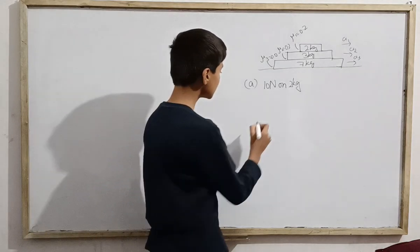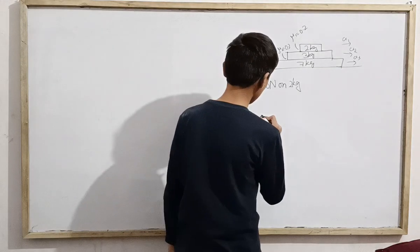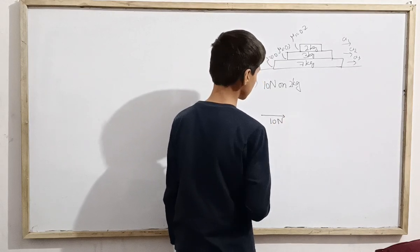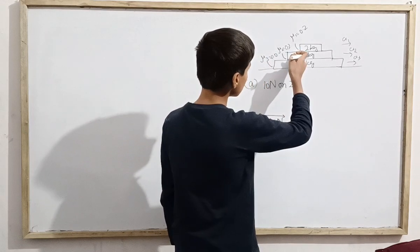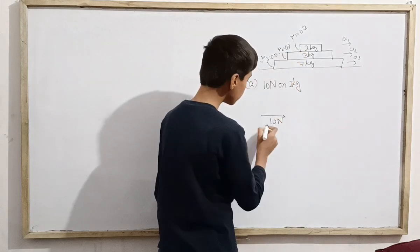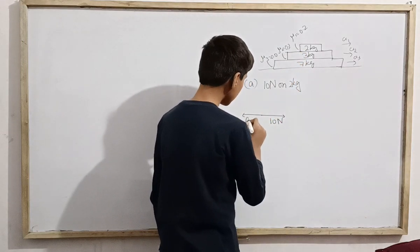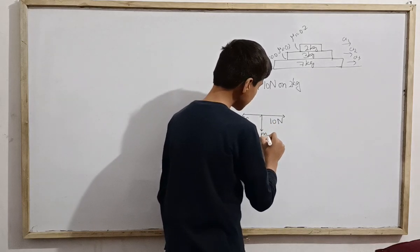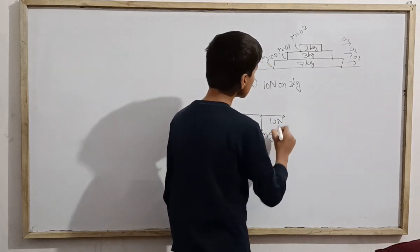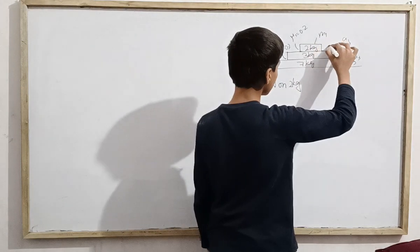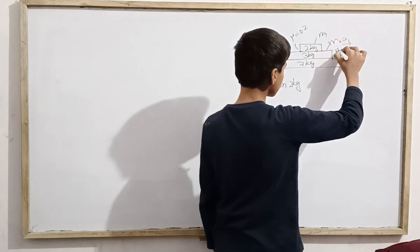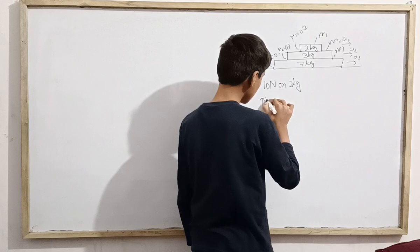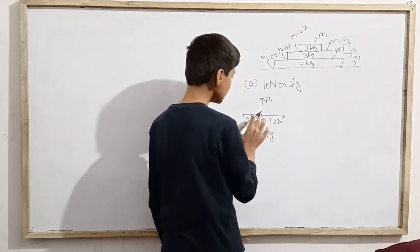Let me start with a free body diagram for the 2 kilogram block. A force of 10 Newton acts on it. Due to the 3 kilogram block, a friction force acts — call it F1. Below is M1G (weight), with M2 and M3 also present. On top, a normal reaction force N1 acts.